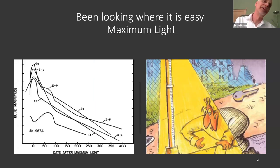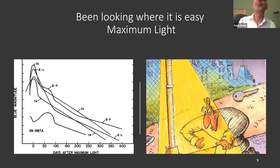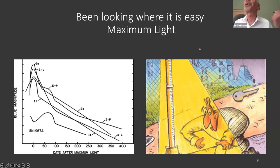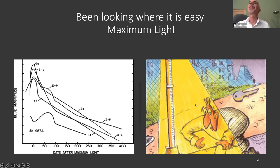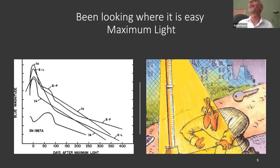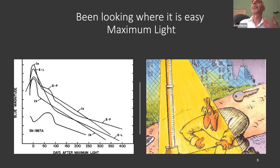We've been studying supernovae seriously since the 1980s, but supernovae are rare phenomena and we've been looking near maximum light when they're brightest. That makes sense because we want to build up samples at the largest volume. But we've been doing that for 30 or 40 years and learned a lot — now it's time to move away from the lamppost. The frontier is really at early and late times.